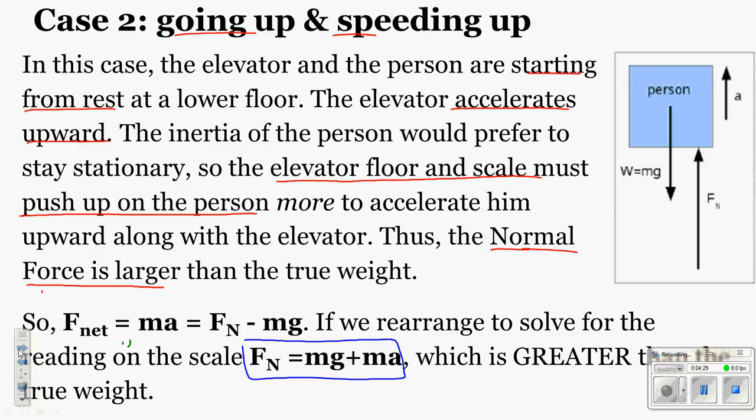In case two, we're going up and speeding up. The person and the elevator are starting from rest at a lower floor and the elevator accelerates upward. The inertia of the person would prefer to stay stationary, so the elevator floor and the scale have to push up on the person more to accelerate him upward along with the elevator. What happens to the normal force is that it gets larger than the true weight. So we have the formula: FNet equals ma equals FN minus mg. We then rearrange to solve for FN.